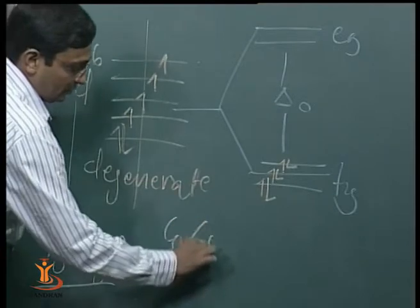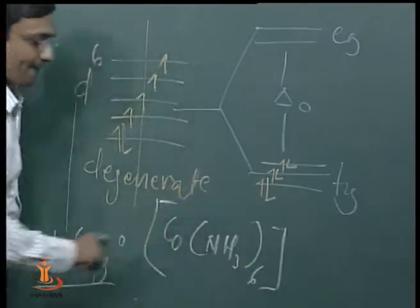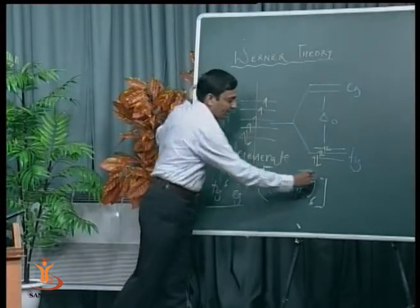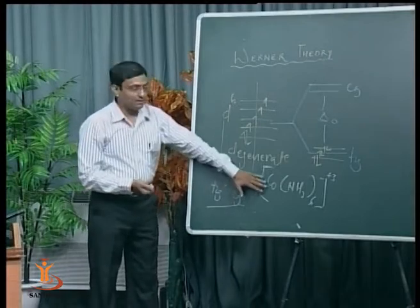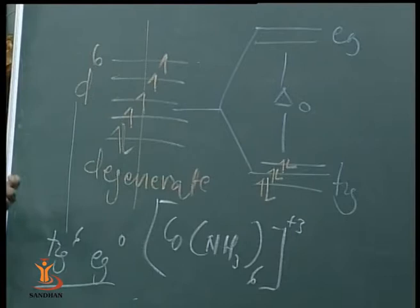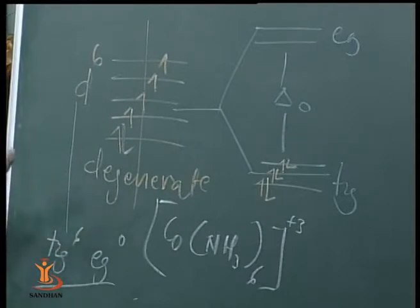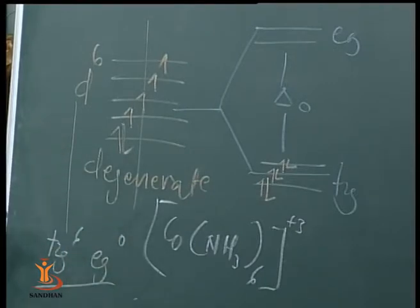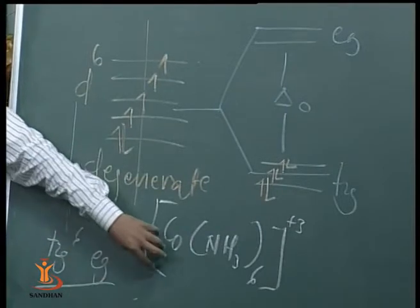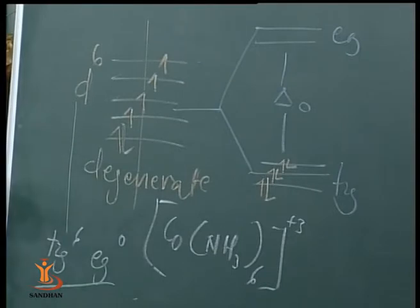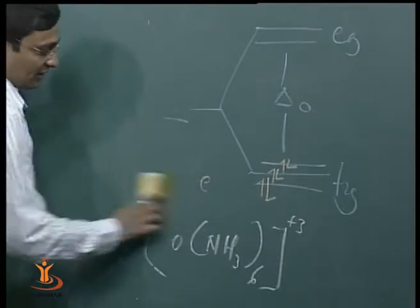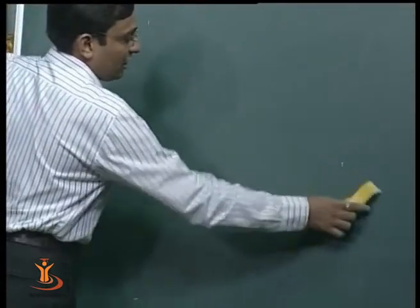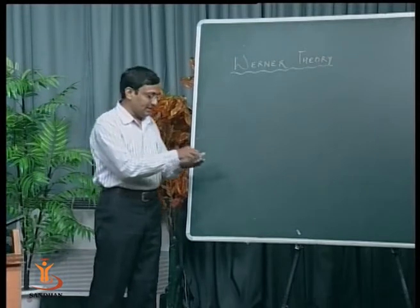For example, in hexamminecobalt(III) [Co(NH₃)₆]³⁺, ammonia is a strong ligand. Cobalt(III) has configuration 3d⁶, 4s⁰, 4p⁰. Due to strong field splitting, pairing occurs in T₂g⁶, leaving e_g⁰. The two empty e_g d orbitals (d_(z²) and d_(x²−y²)) along with one 4s and three 4p orbitals are used for hybridization D²SP³. The shape is octahedral and the magnetic property is diamagnetic — no unpaired electrons.